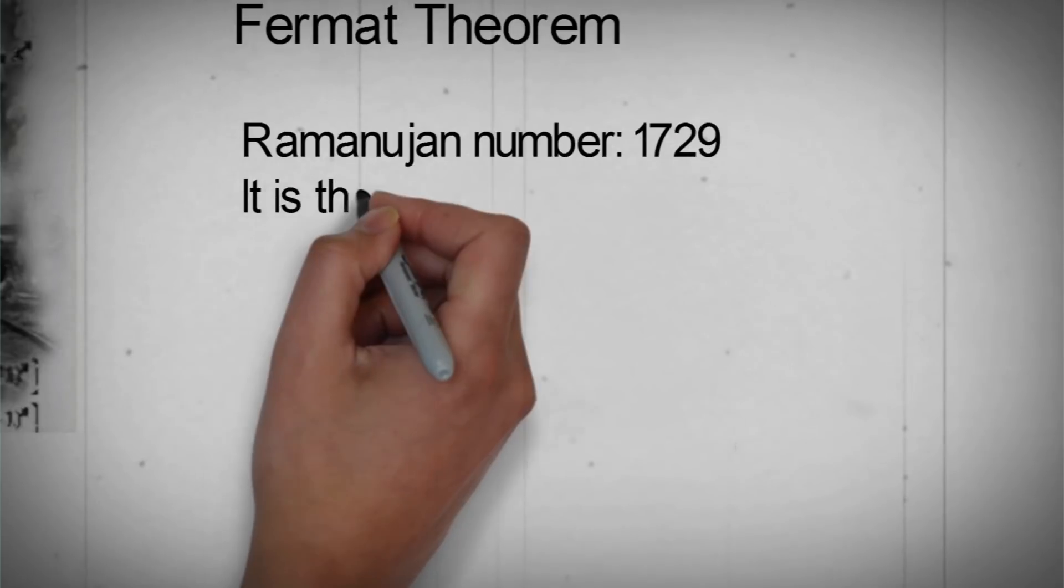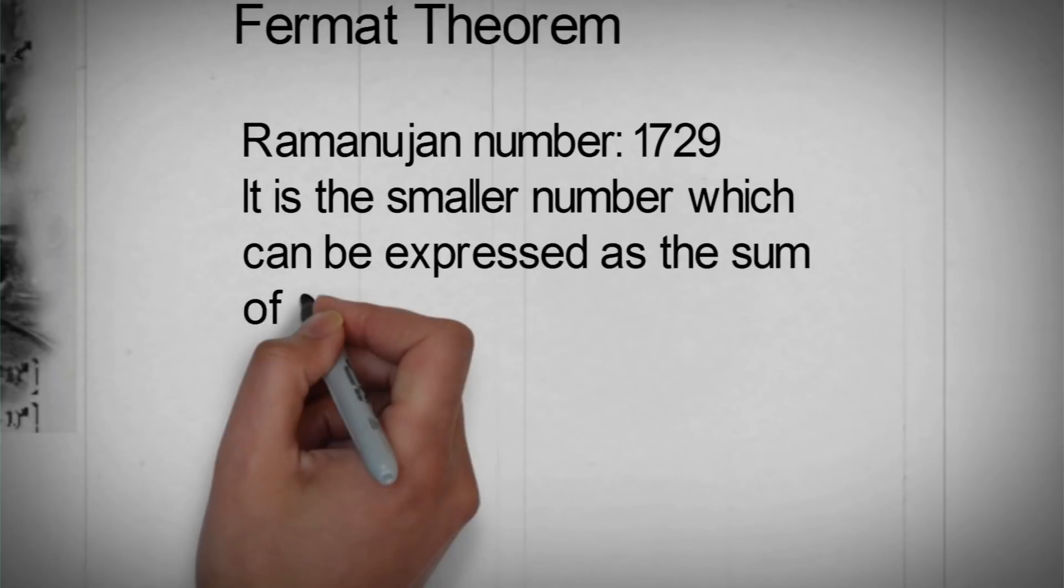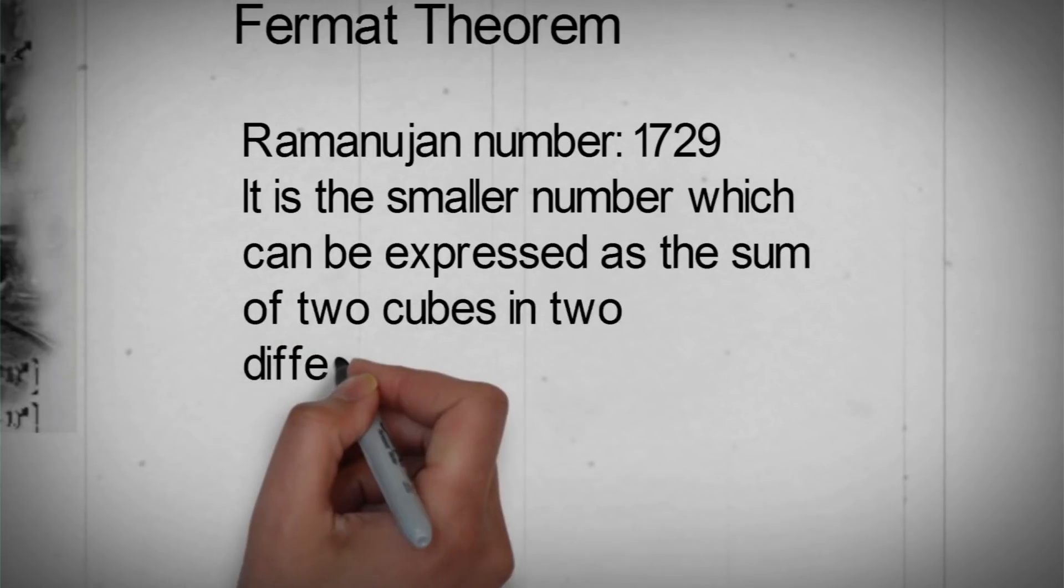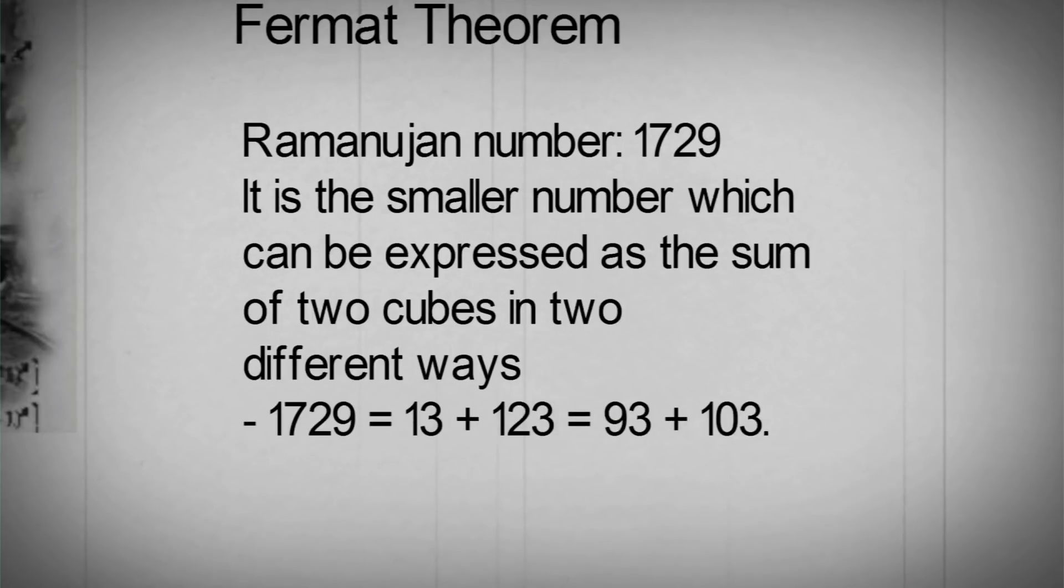1729 is the famous Ramanujan number. It is the smallest number which can be expressed as the sum of 2 cubes in two different ways. 1729 equals 1 cubed plus 12 cubed, equals 9 cubed plus 10 cubed.